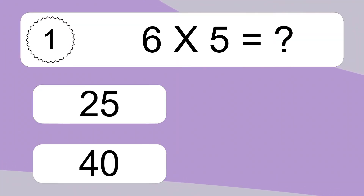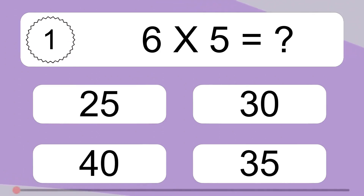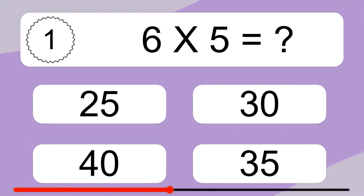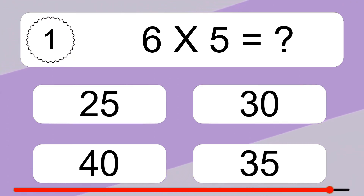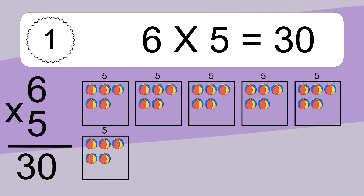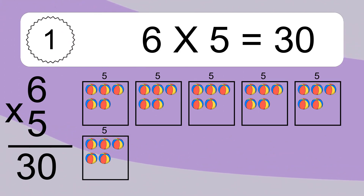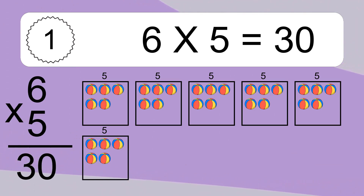Six times five equals what? Six times five equals thirty. We have six boxes, and each box has five colorful balls inside. If you count all the balls in all the boxes together, you will have six times five balls. This equals thirty balls.